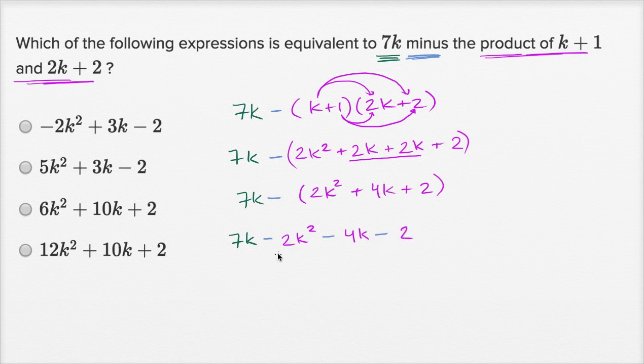And let's see, if we write the highest degree term first, you get negative 2k squared, that's our highest degree term. And actually immediately when you look at the choices, only one of these start with negative 2k squared, has negative 2 as the coefficient on the k squared term. So we already know that one's going to be the choice, but let's just confirm it.